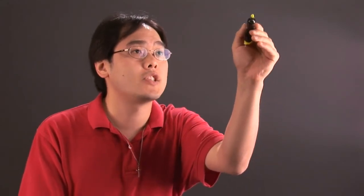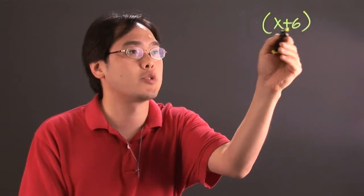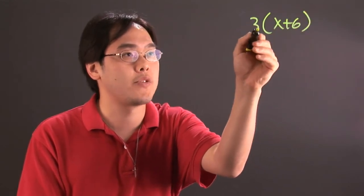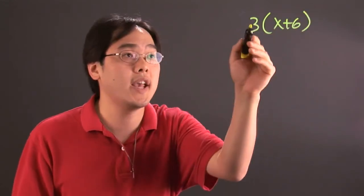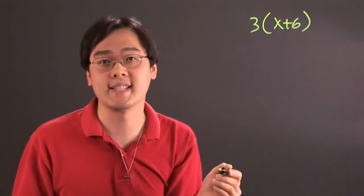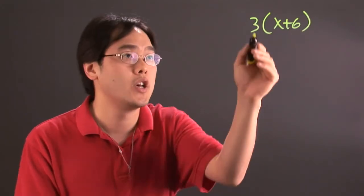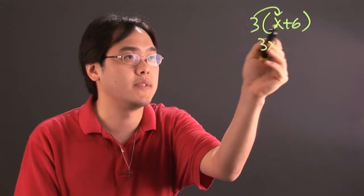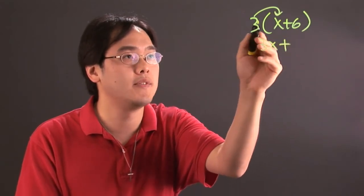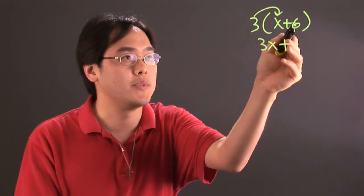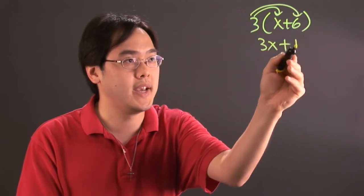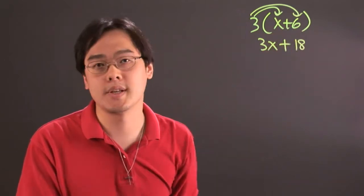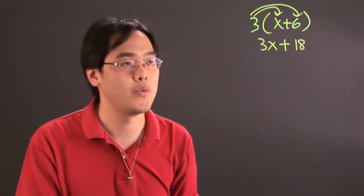So for example, if you have in parentheses x plus 6, and you're multiplying by 3, what you're doing is you're taking the 3 and multiplying with the x and the 6. So 3 times x is going to give you 3x. Now positive times a positive is going to give you another positive. So 3 times 6 is going to give you 18. So 3 times (x plus 6) is going to give you 3x plus 18.